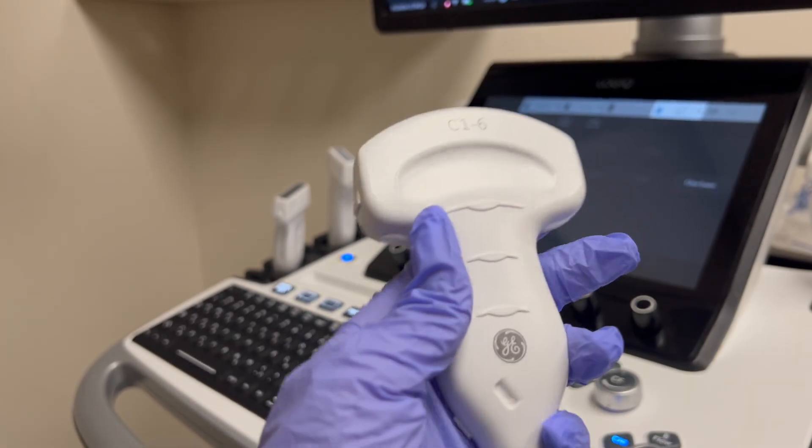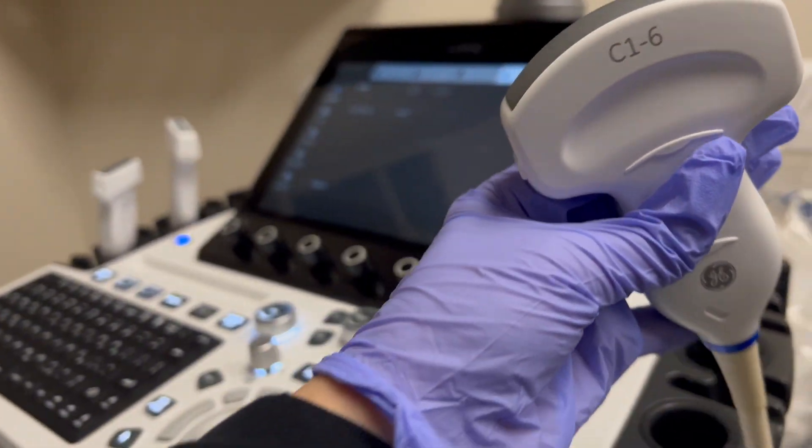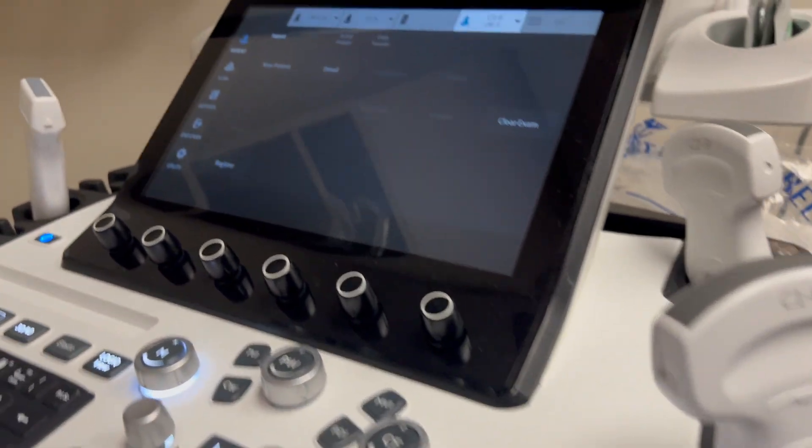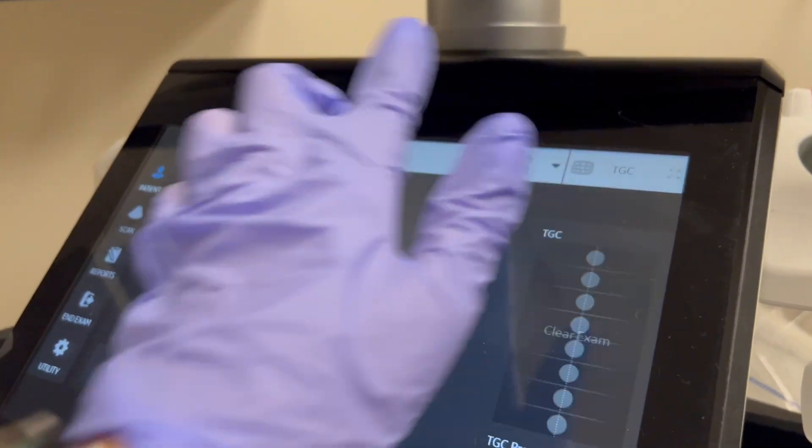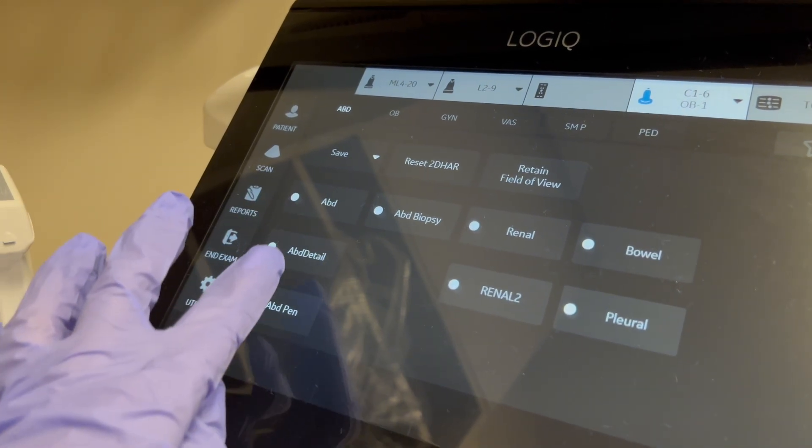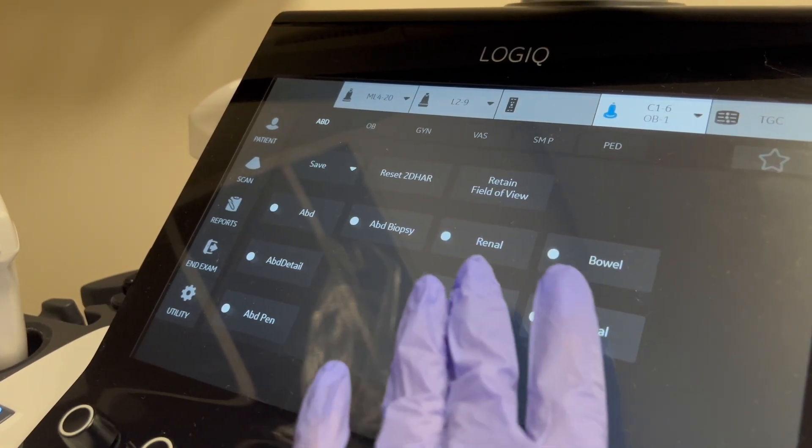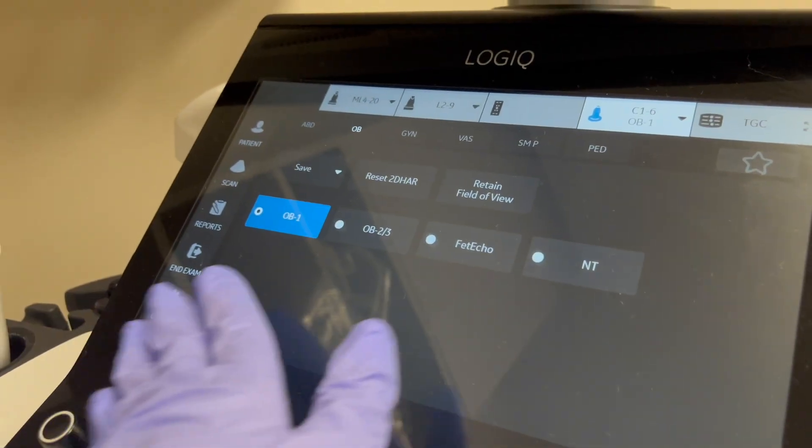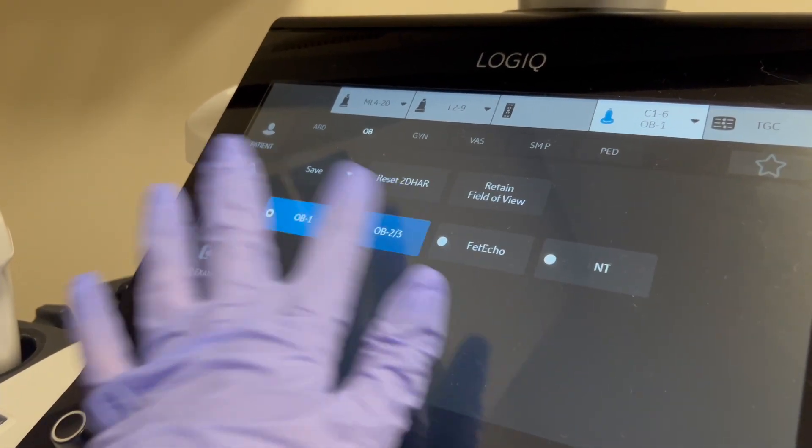Each one has its strengths and weaknesses according to patient size, depth of the organ you're trying to take a picture of, or even patient age. If you click on the curve settings on the ultrasound machine, you can see here there's all different types of settings that you can use this probe for.